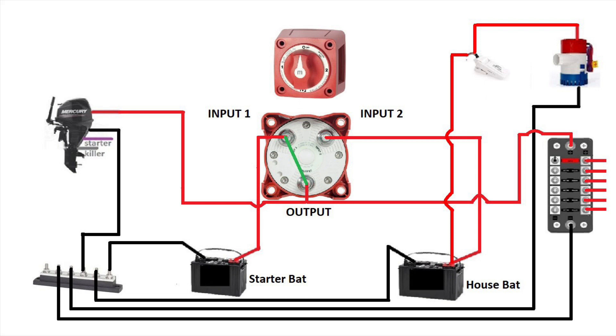Now that the wiring is complete for the switch, if you turn your knob to input one, this is what will happen. You can see with the little green line that I added that input one and output will be connected. At this point, we have the starter battery selected, so you can start your engine.